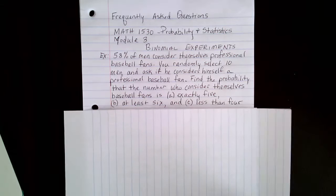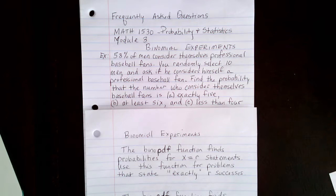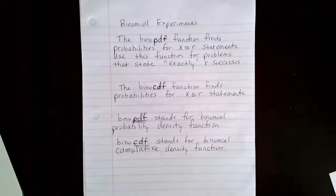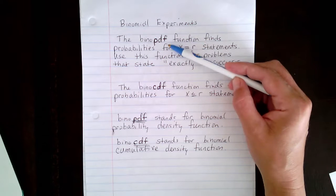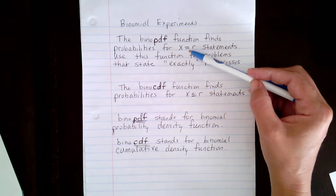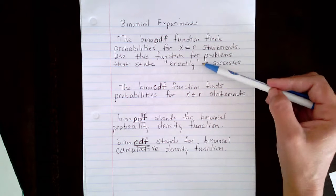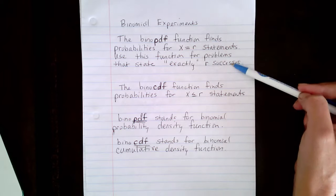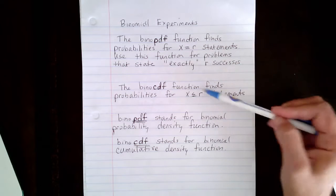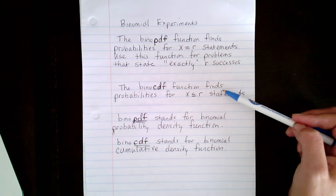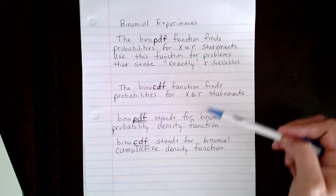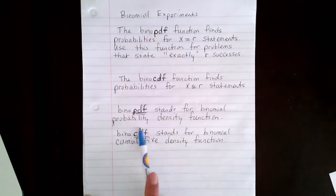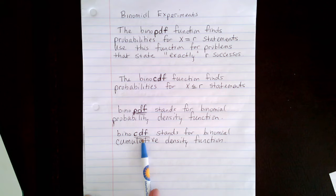Before we go on, I want to talk about the calculator functions we'll be using to solve this problem. There are two calculator functions for binomial experiments. The first is the binomial PDF function — it finds probabilities for x equals r statements, used when the problem states exactly r successes. The other is the binomial CDF function, which finds probabilities for x is less than or equal to r statements. Binomial PDF stands for probability density function; binomial CDF stands for cumulative density function.